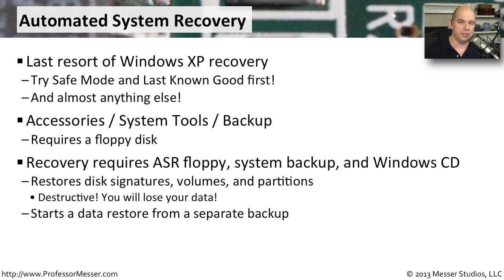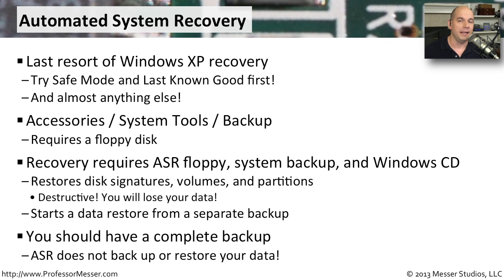Once you decide that you're going to use this Automated System Recovery process, you would boot with your Windows installation media and choose the repair options available. It will prompt you for your ASR floppy. You'll put that floppy disk in, and it will delete everything on your disk and rebuild all of those partitions. Be sure that you have a backup, because the ASR process will then prompt you to begin the recovery from those backup disks.